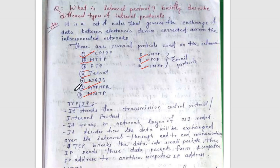The first protocol is TCP/IP — Transmission Control Protocol and Internet Protocol. When we define a protocol, we first write the abbreviation and full form, then we identify which layer of the OSI model it works on.